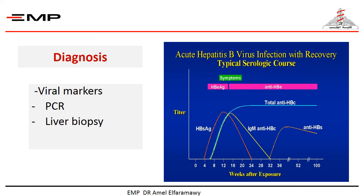Hepatitis B e antigen indicates viral replication, while hepatitis B e antibody indicates that the virus is not replicating. PCR for the viral load is commercially available. Liver biopsy is most useful in chronic infection to determine the degree of fibrosis and inflammation.